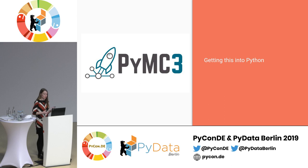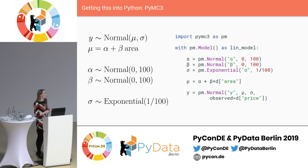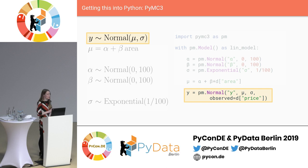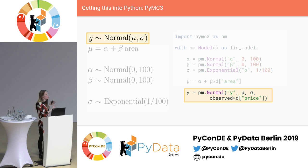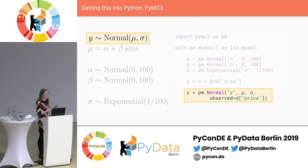Now let's get this model into PyMC, into Python. I'm using PyMC3 and I'll start with coding the linear model, which is relatively easy to extend to the hierarchical model. In the model description, we start with our y — that's the price, the parameter we want to predict. In Python, we have to declare all the other variables first, so y goes at the bottom. It's also implicit in the model description that y is the observed variable, which we have to make explicit in Python.